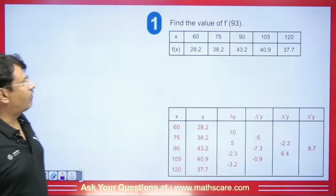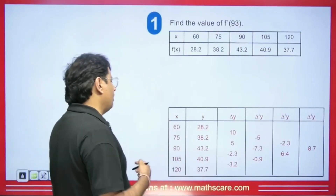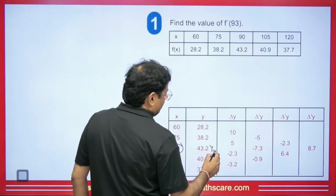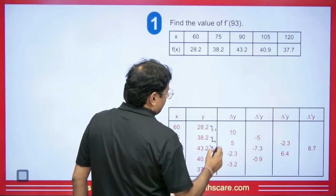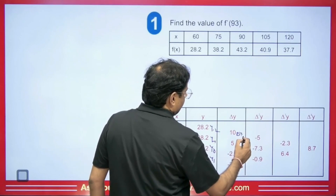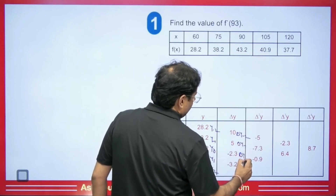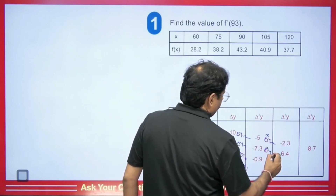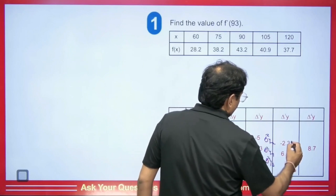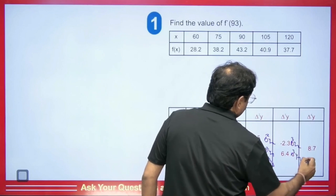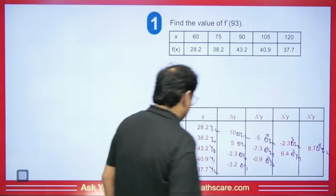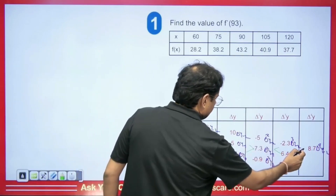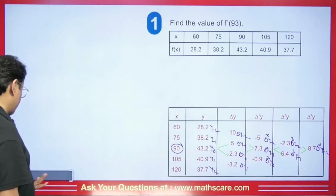Next question: find the value of F'(93). We have data points and we need to take 90 as the base, so Y₀ corresponds to x = 90. Then Y₋₁, Y₋₂ are above, and Y₁, Y₂ below. The difference labels become ΔY₋₂, ΔY₋₁, ΔY₀, ΔY₁, Δ²Y₋₂, Δ²Y₋₁, Δ²Y₀, Δ³Y₋₂, Δ³Y₋₁, and Δ⁴Y₋₂. Whenever we apply the Sterling formula with this as the base, this term structure applies.